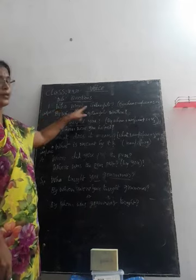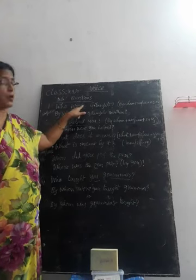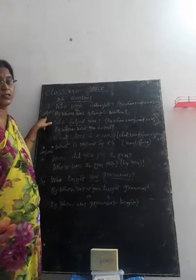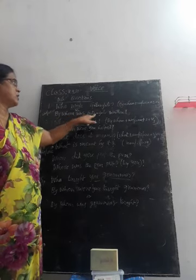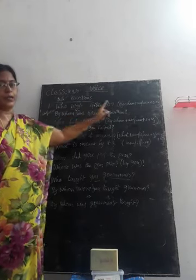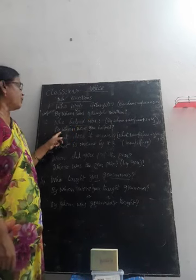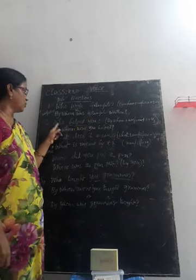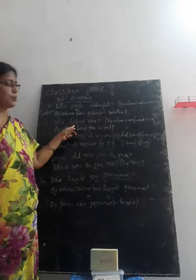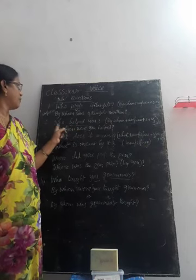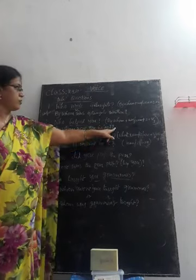Let's review. Who wrote Geetanjali? By whom was Geetanjali written? WROTE is V2, so the question is in past tense — we select B forms WAS or WERE. Geetanjali is singular, so we use WAS. Write, wrote, written — V3 is written. By whom was Geetanjali written? Who helped you? BY WHOM — common for WHO. The question is in past tense, so we select past tense B forms. YOU takes WERE. By whom were you helped? V3 is common — put question mark.